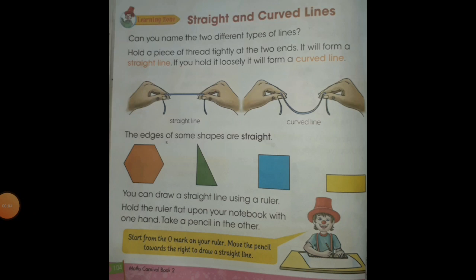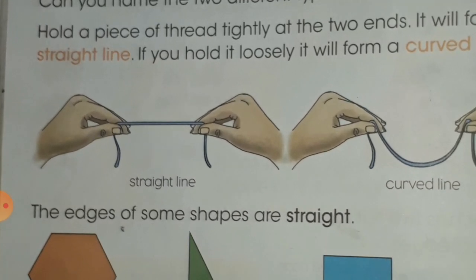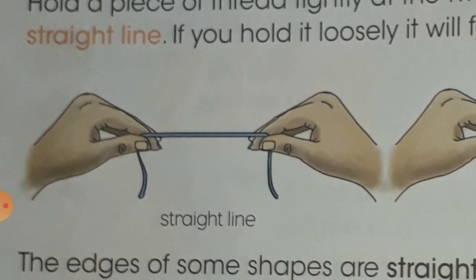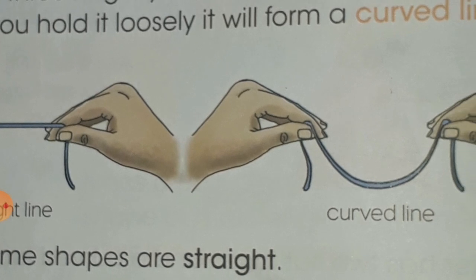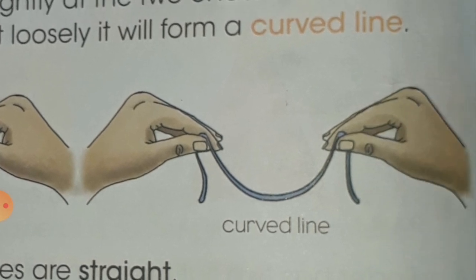It's time for an activity to understand this concept of straight and curved lines. Hold a piece of thread tightly at the two ends. It will form a straight line like this. If you hold it loosely, it will form a curved line.